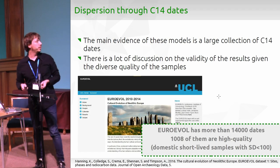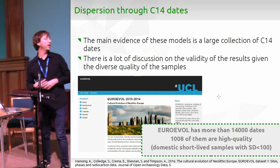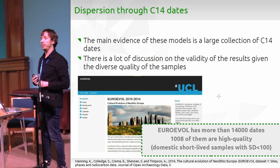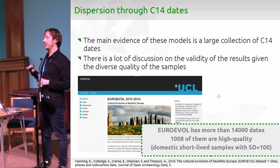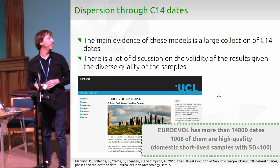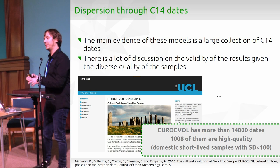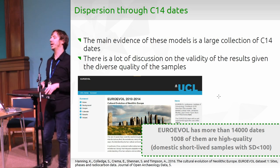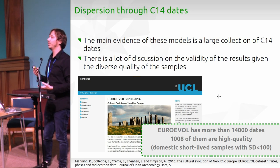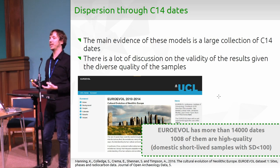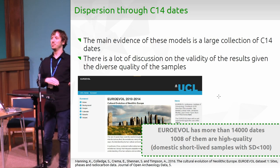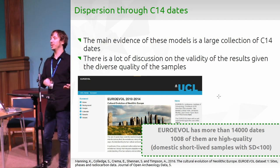The Euroevol project, led by Stephen Shennan at UCL, collected 14,000 dates mostly from central and northern Europe. Experts on C14 dates would say that only about 1,000 of those were high-quality dates that should be used. Yet the debate continues: while some argue you are estimating using 15,000 samples that are not really good, others say that applying the law of large numbers, the errors cancel each other out and you get a good estimate.